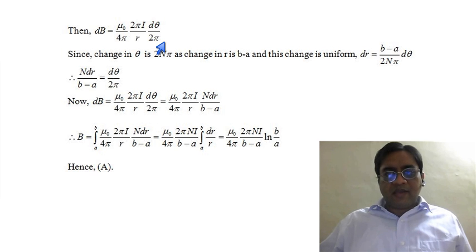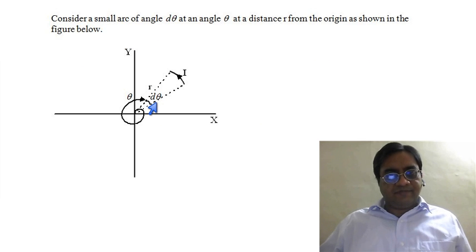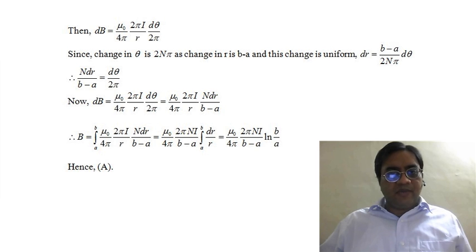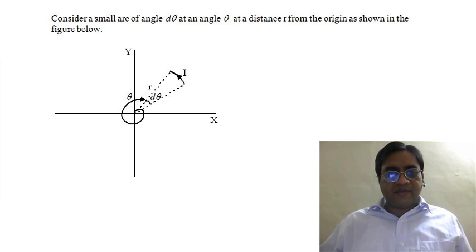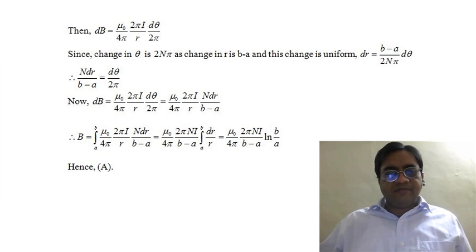Here, the angle of the arc is dθ. So the little field dB at the center would be μ₀ by 4π times 2πI upon r times dθ by 2π.